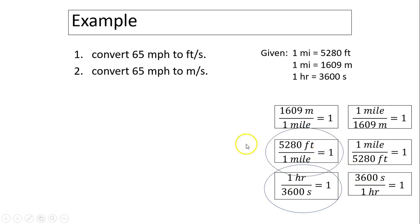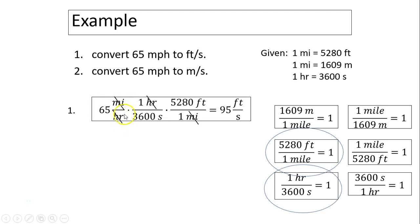We use this too. 65 miles per hour times hour cancels. One hour equals 3600 seconds. Now how do you get rid of miles? You multiply by this factor: 5280 feet over one mile equals one. Mile and mile cancels. You have 95 feet per second.